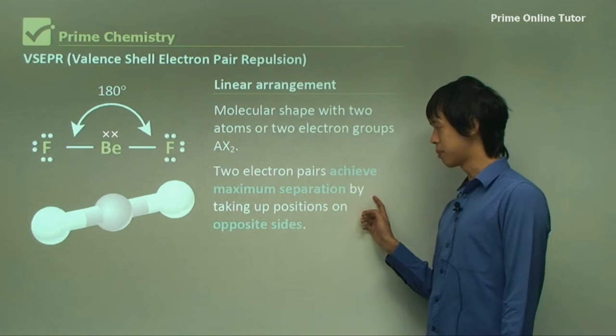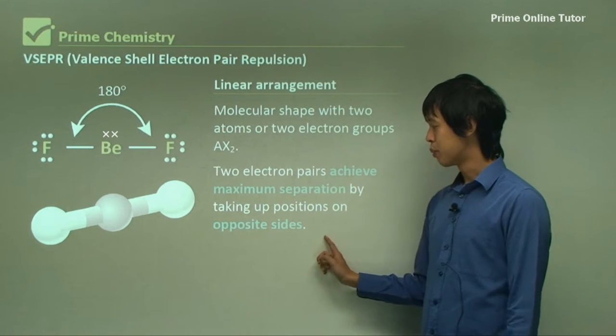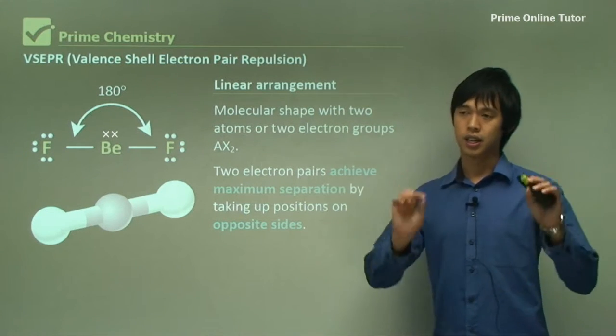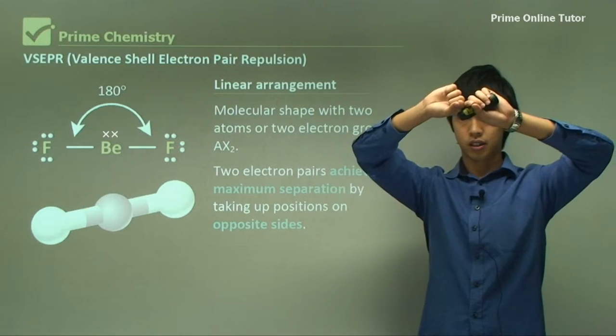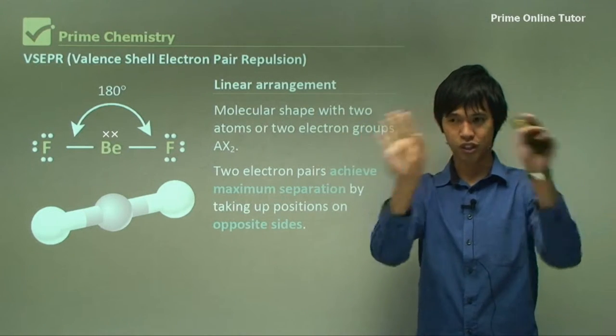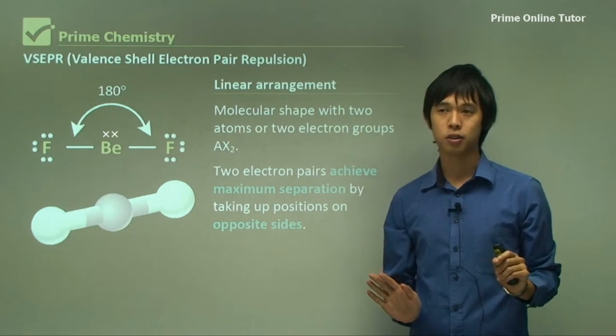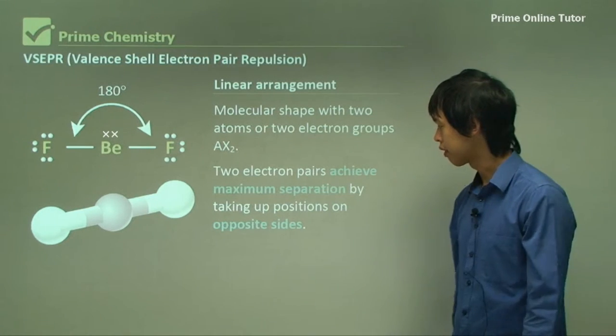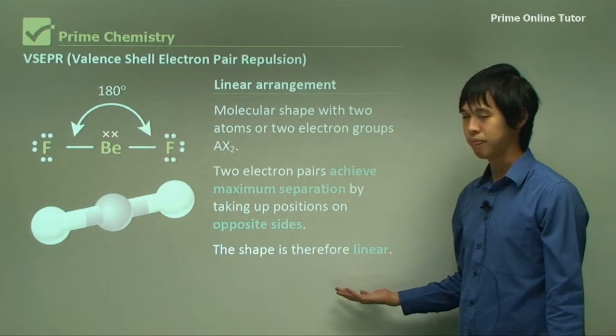Two electron pairs achieve maximum separation by taking up positions on opposite sides. So basically two pairs of electrons actually just move to the opposite sides of the atom. They just want to be as far away from each other as possible. And that gives you the linear shape.